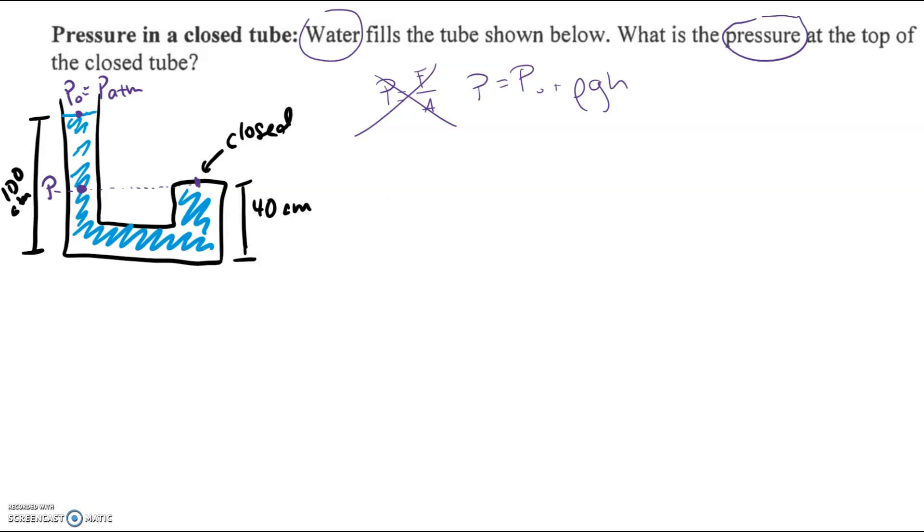So in doing that, we have the pressure there is equal to P naught, which we said is atmospheric pressure, plus rho, so this is the density of our liquid, which is water, G, times the depth from the surface of that liquid. So since we're looking at the point here on the left-hand side, the depth, well, we're told that the depth at the bottom of the tube is 100 centimeters. And we know from the right-hand side that that height is 40 centimeters, so that leaves us with 60 centimeters for our height. So we'll plug that in in a moment.